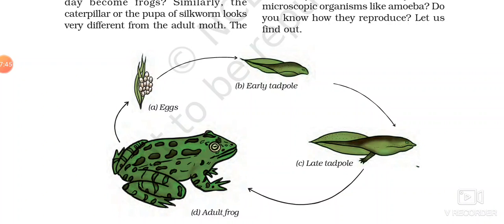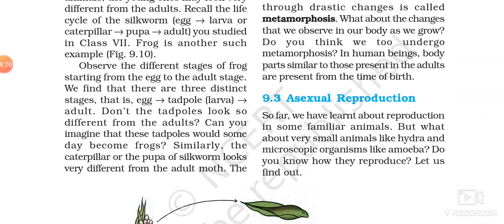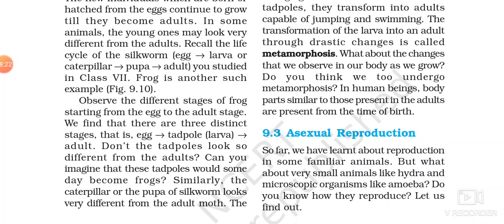Just like frog, the silkworm also undergoes metamorphosis. When it is an egg, then it is a larva, then a pupa, and then the adult. If you compare the larva and adult, they also do not resemble each other. There are drastic changes in the larva for it to become an adult silkworm. So that process is also known as metamorphosis. The definition of metamorphosis: transformation of a larva into an adult through drastic changes is called metamorphosis.